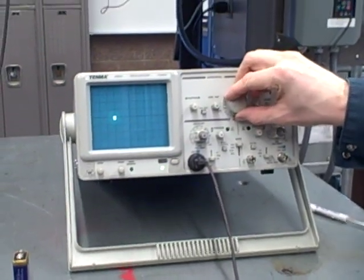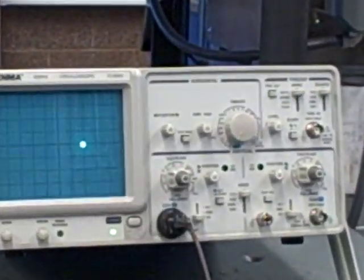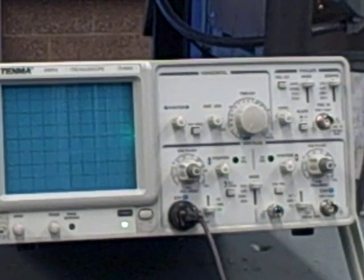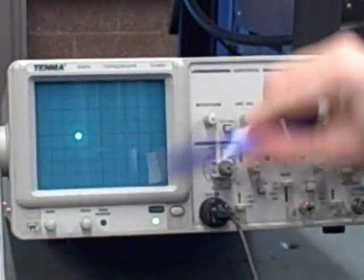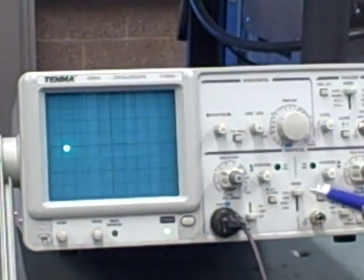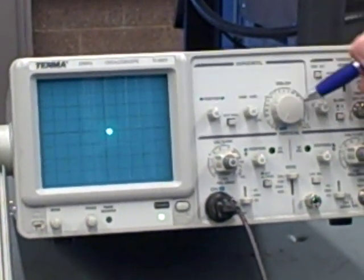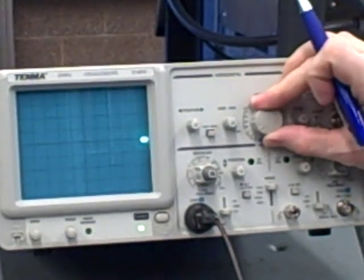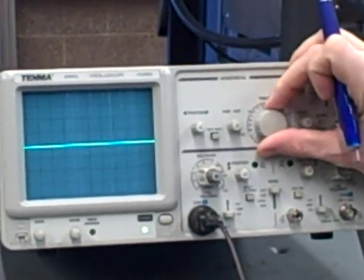If I turn down this knob right here called the sweep, we see a small dot scrolling across the screen, and that dot moves vertically with the amount of voltage we apply to the channel. It moves horizontally according to a set speed dictated by the setting of this time per division knob. I can move this knob here, make the dot fly by faster and faster.